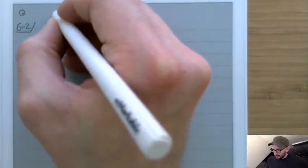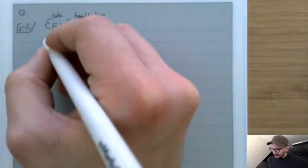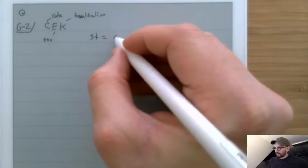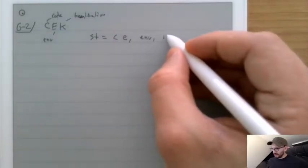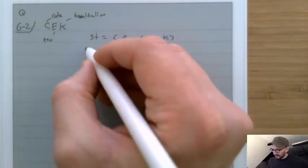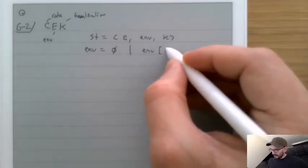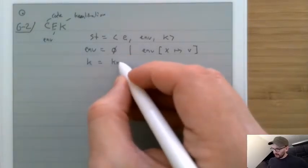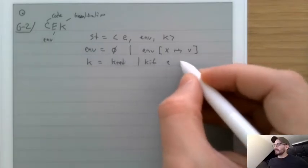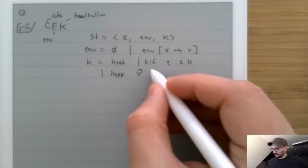The C stands for code, the K stands for continuation, and E stands for environment. Its state is: an expression (the code), an environment, and a continuation. Environments are either empty or an environment extended with a mapping from one variable to one value. Continuations are the same as before: KRET, KIF, and KAPP with a sequence of values, expressions, and a K.